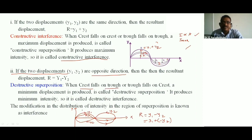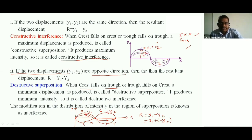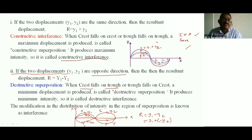When the crest of one wave combines with the trough of another wave, or the trough of one wave combines with the crest of another wave, it produces minimum displacement — called destructive superposition. This produces minimum intensity and is called destructive interference. The modification in the distribution of intensity in the region of superposition is known as interference.